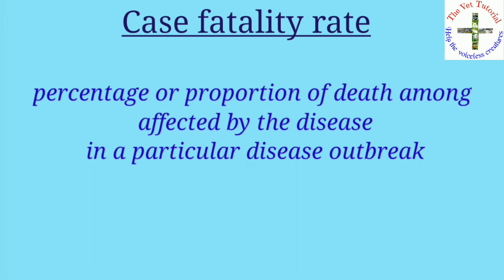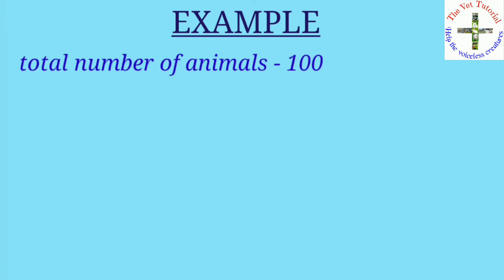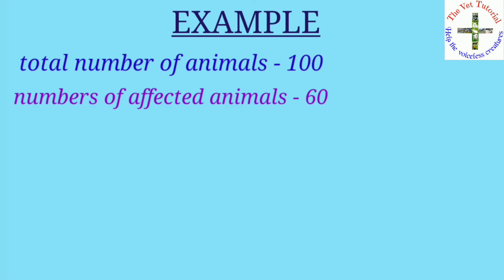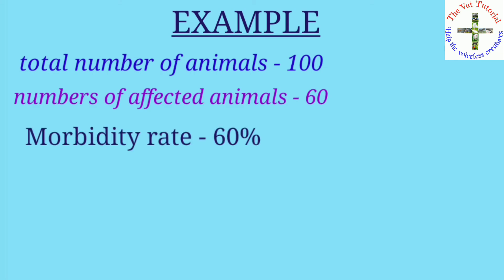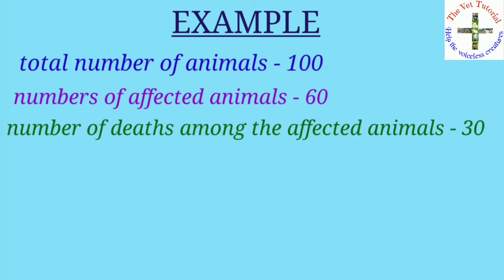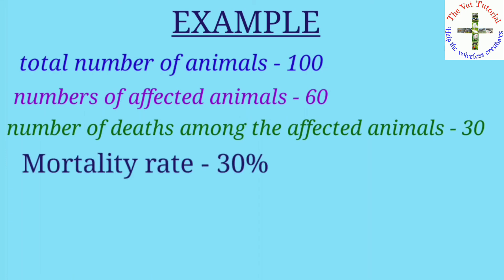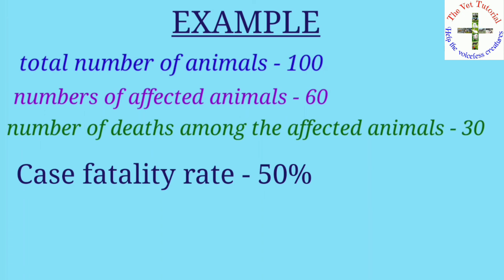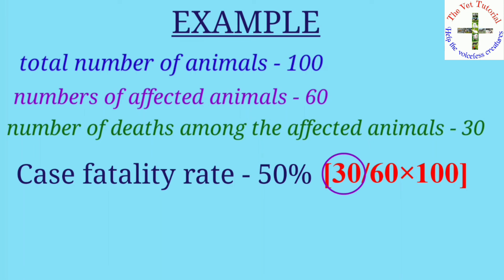For example, suppose the total number of animals is 100 and 60 are affected — the morbidity rate is 60%. If 30 of the affected animals die, the mortality rate is 30%. The case fatality rate is 50%, calculated as 30 deaths divided by 60 affected animals, multiplied by 100.